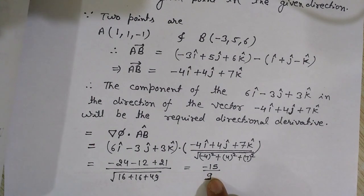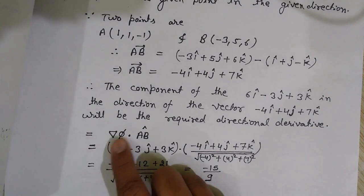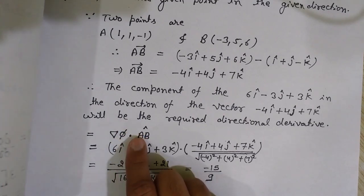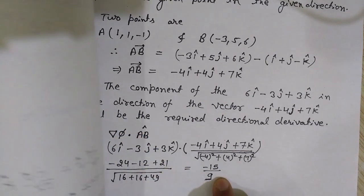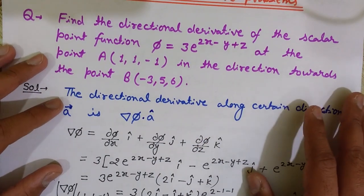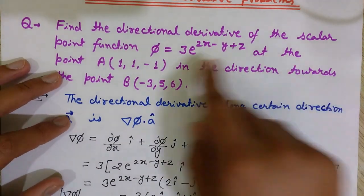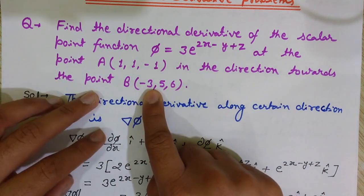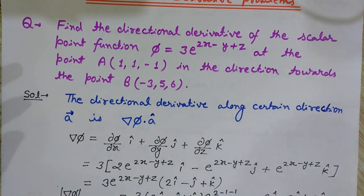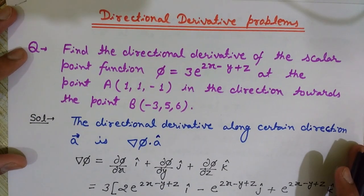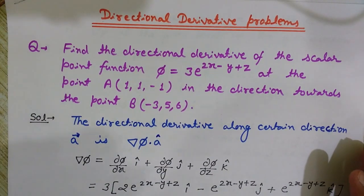So the answer is -15/9. Since we dot product two vectors the result is a scalar, so the directional derivative of this scalar function at point A(1, 1, -1) in the direction towards point B is -15/9. I hope you have understood the concept of directional derivative and how to find it in vector calculus problems.